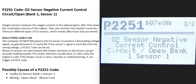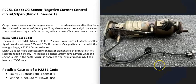Today I'm talking about a P2251 code — what it is and how you could go about fixing it. A P2251 code is an O2 sensor negative current control circuit open, bank one sensor one. Basically, there are oxygen sensors located down the exhaust.